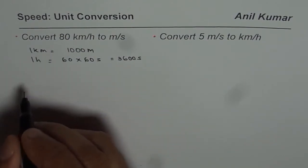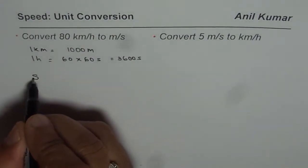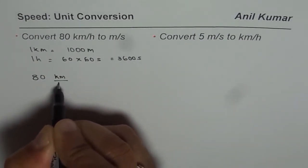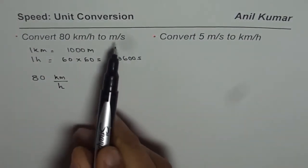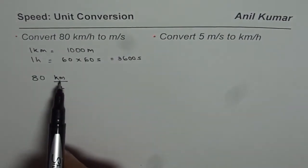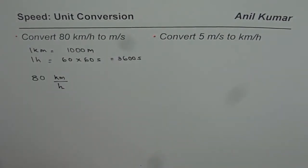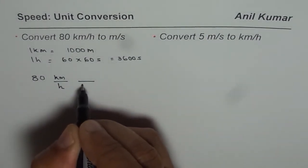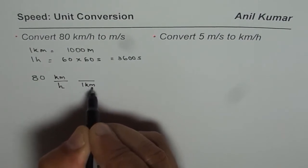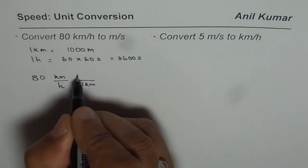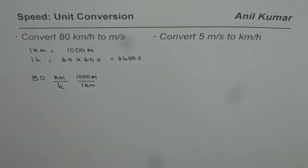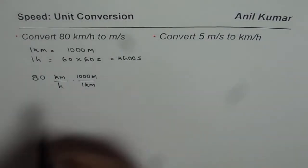What you can do here is let's write down 80 and the units, kilometers per hour. What do we need? We need meters per second. That means we do not need kilometers. So what we should do here is since we don't need kilometers we'll say 1 kilometer equals 1000 meters. So kilometer and kilometer can cancel. So we'll multiply by this term.